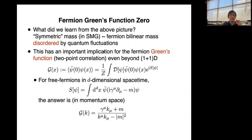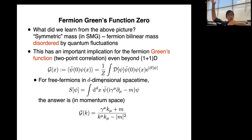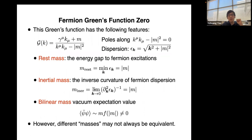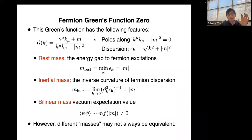This has important implications for the fermion Green's function, generalizable beyond 1+1D. For a free massive fermion in D-dimensional spacetime, the Green's function in momentum space is G(k) = (iγ·k + m)/(k² + m²). The poles of the Green's function specify the on-shell condition and fermion dispersion relation. One can define a rest mass (energy gap, E = mc²), an inertial mass (inverse curvature of the dispersion), and a bilinear mass vacuum expectation value ⟨ψ̄ψ⟩ ≠ 0.